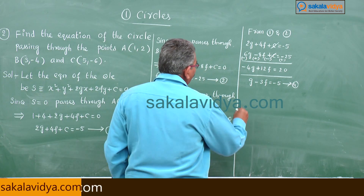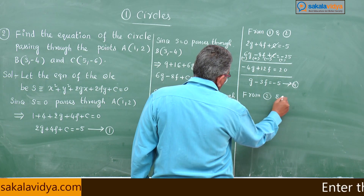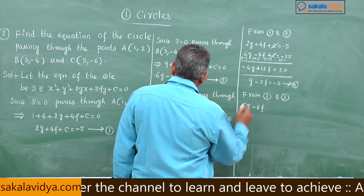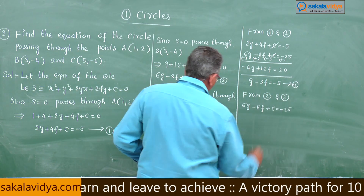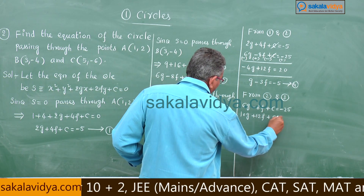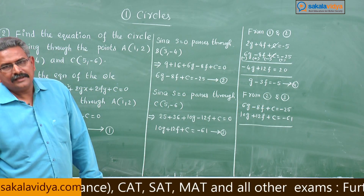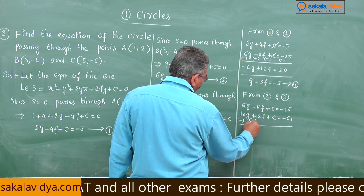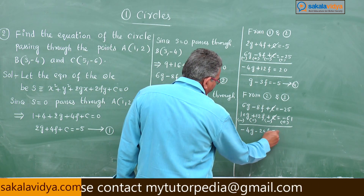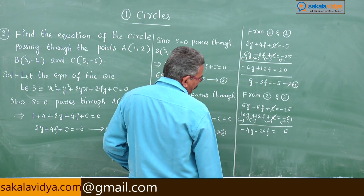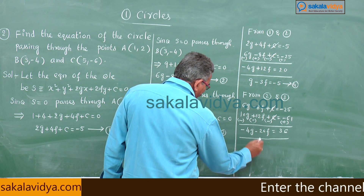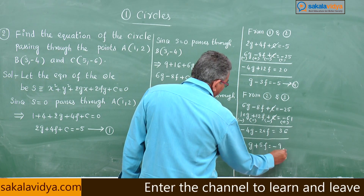From equations 2 and 3: equation 2 is 6g − 8f + c = −25, and equation 3 is 10g − 12f + c = −61. Subtracting to cancel c gives −4g + 4f... simplifying: −4g − 20f = 36, divided by −4 gives g + 5f = −9. Say equation 5.